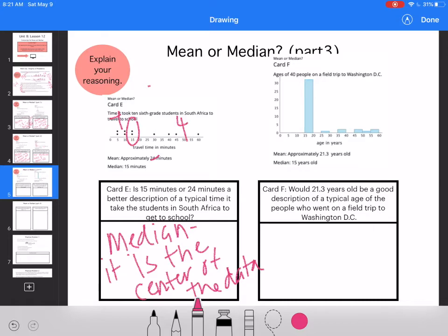Would 21.3 years be a good description of a typical age of people who went on a Washington D.C. field trip? Field trip implies that you're not an adult. 15 to 20 is the peak of the data. That's also the median. So I would say the median of the data. 15 is an age people go on field trips.